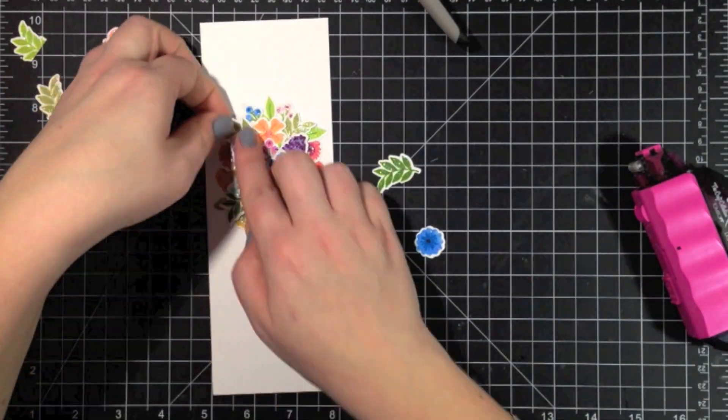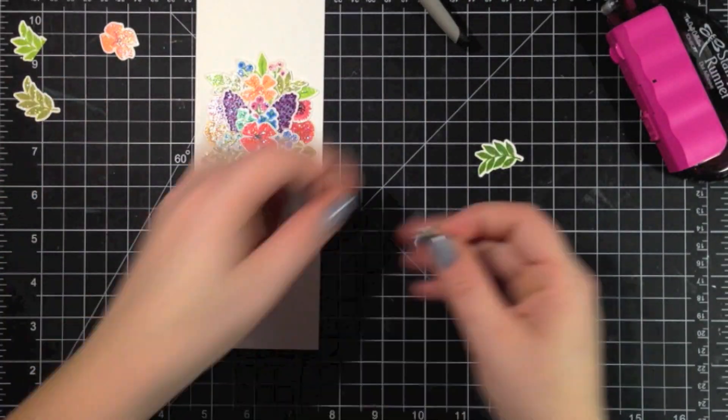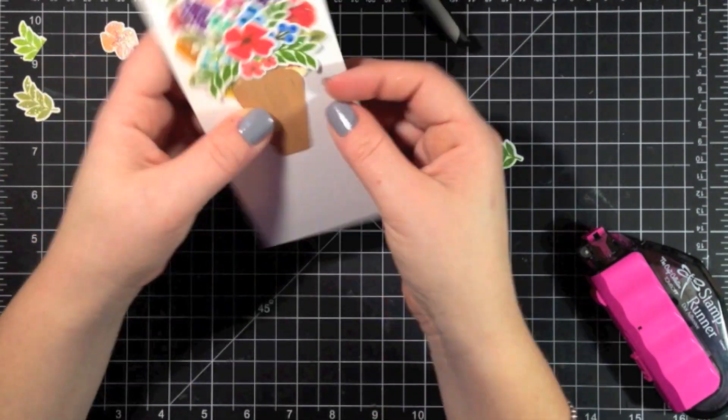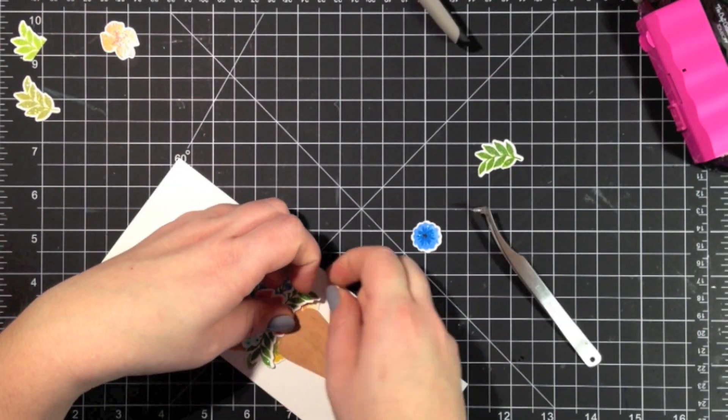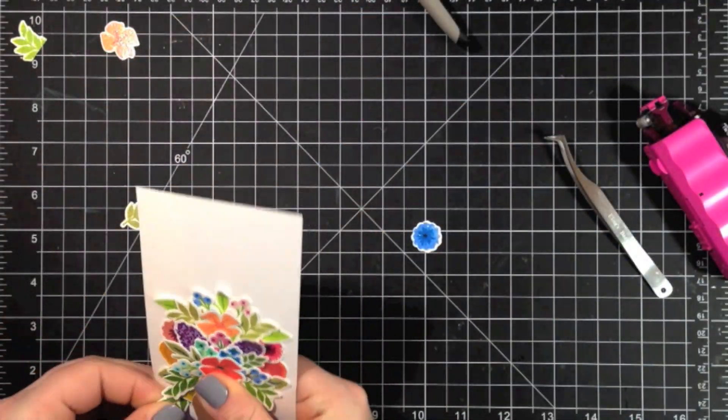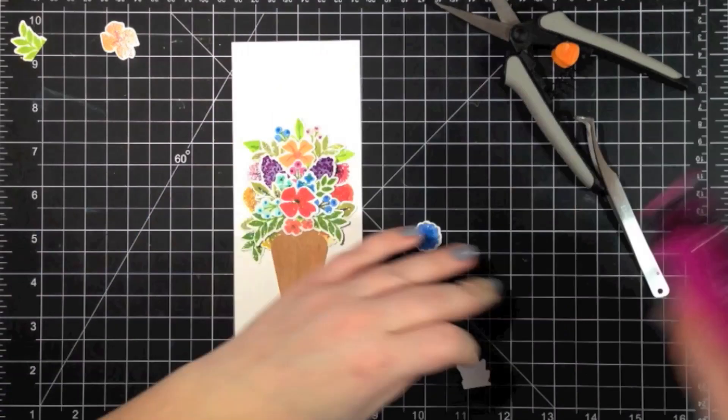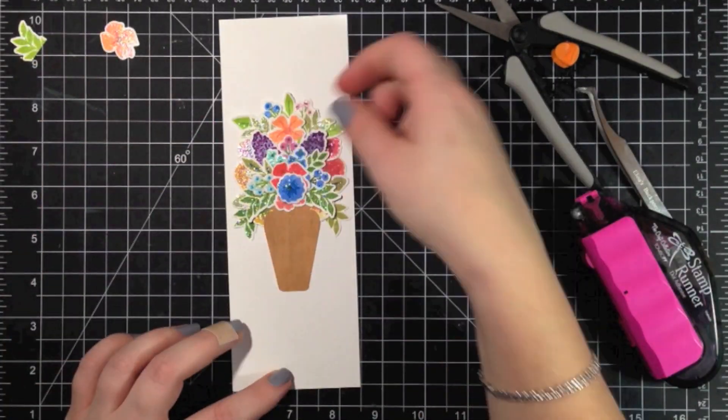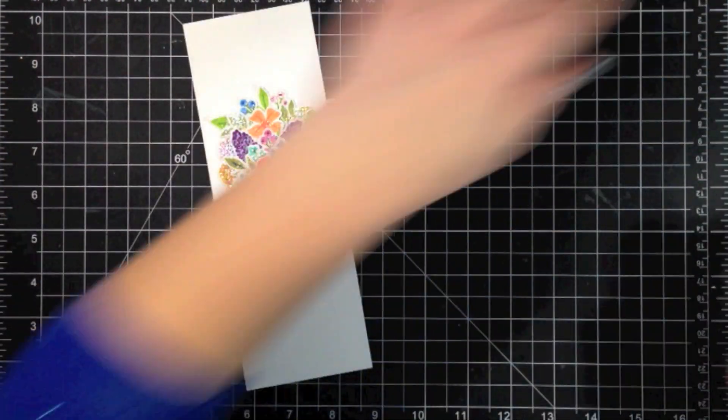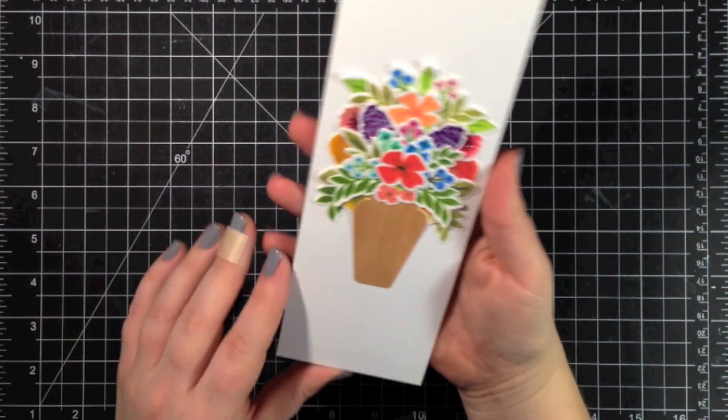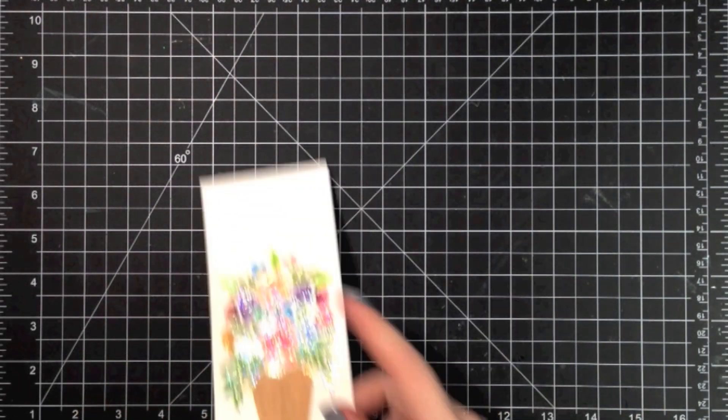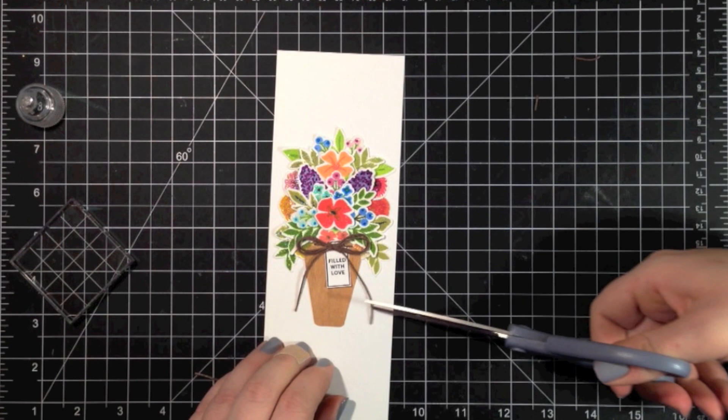Once I had all the flowers that I wanted, I continued to add some leaves into different areas just to make it look completely realistic and have some nice greenery in there. Then once I had all that finished, I used my fingers and lifted some of the flowers and lifted some of the leaves to give a little bit more dimension and have them raised off the paper there a little bit. You can see I have that fully assembled there and I wish you could see it in real life. The sparkle is so great on these flowers.